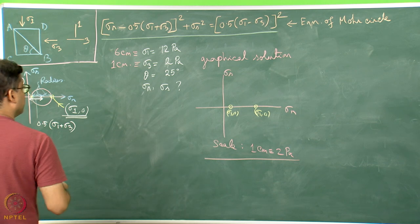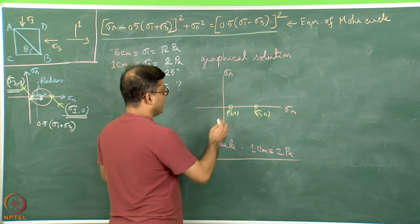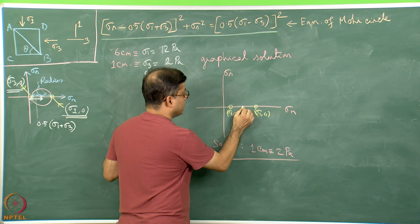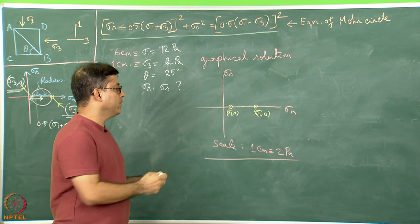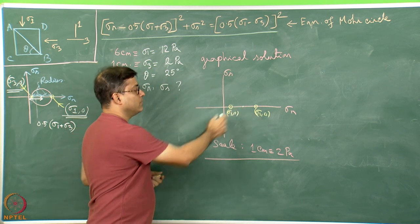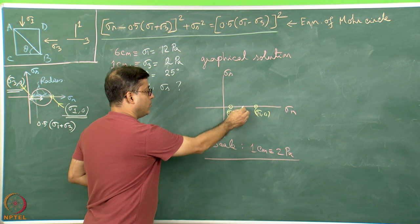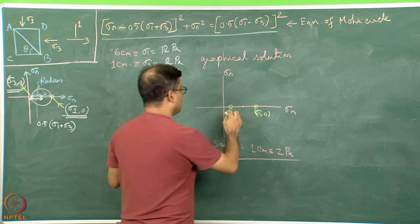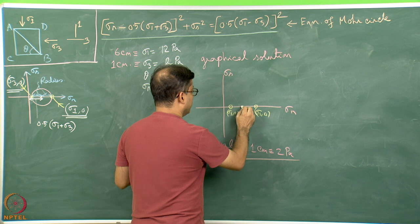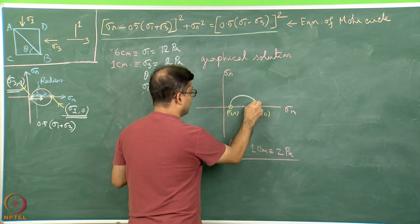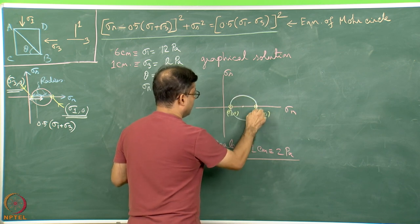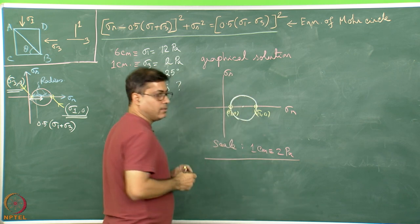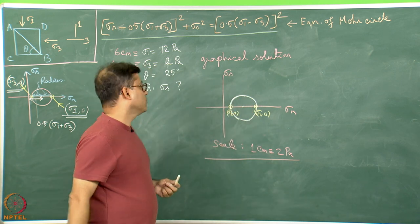Now I know these two points. I can find out the midpoint geometrically — I will measure the distance between them, find the midpoint, and plot it. This is going to be the center of the Mohr circle. I then draw the Mohr circle using a compass, taking this midpoint as the center.